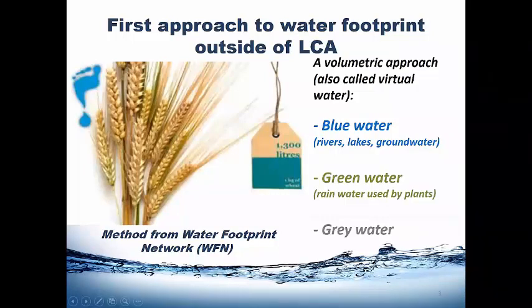You may have heard of the Water Footprint Concept already for quite some years. It first started as an approach led by the Water Footprint Network with the terms blue water, green water, grey water. It was really a volumetric approach, which we can also call virtual water, which summed all the water consumed along the supply chain and the production of specific goods. Blue water referred to water in rivers, lakes, and groundwater, whereas green water refers to rainwater used by plants directly where it fell, and grey water as a hypothetical dilution volume with respect to regulation.